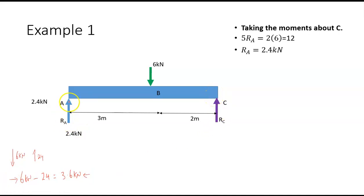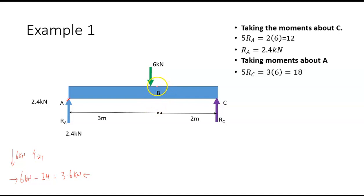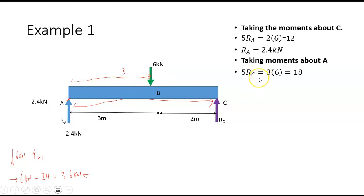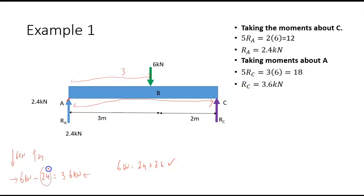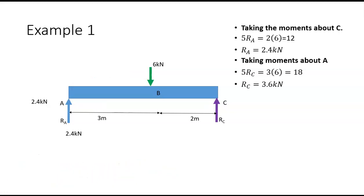I prefer to also take moments about A to verify. The anti-clockwise moment is five times Rc and the clockwise moment is three times six, which is 18. Solving gives Rc equal to 3.6. We can confirm: six kilonewtons equals 2.4 plus 3.6 — correct. Doing it this way means any mistake in calculating Ra will show up in this sum.